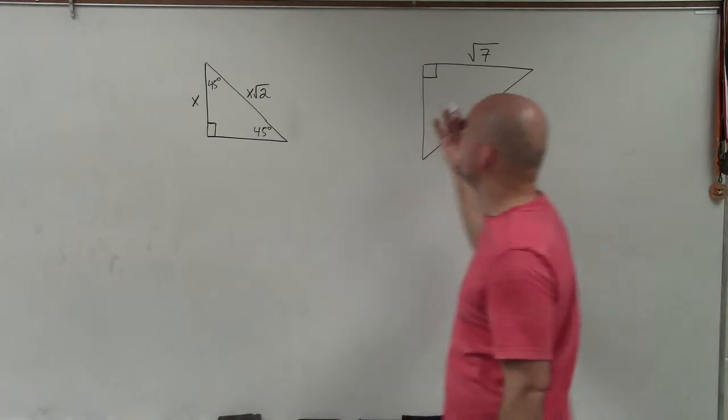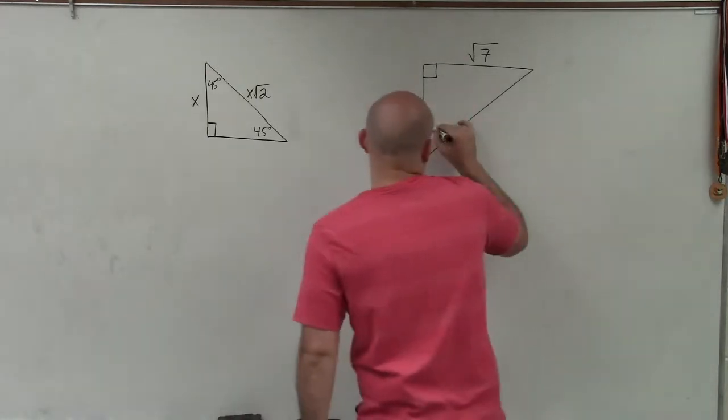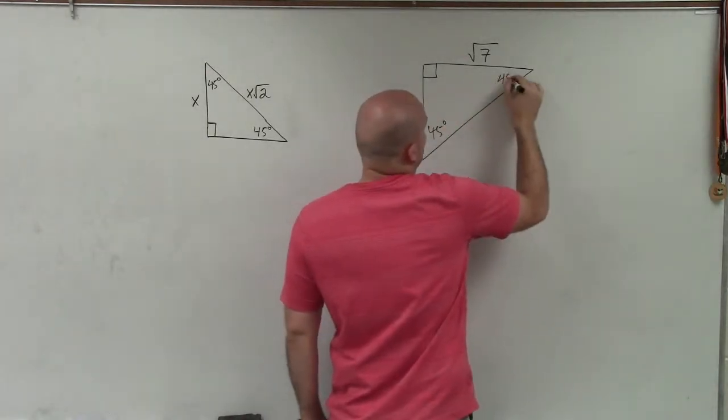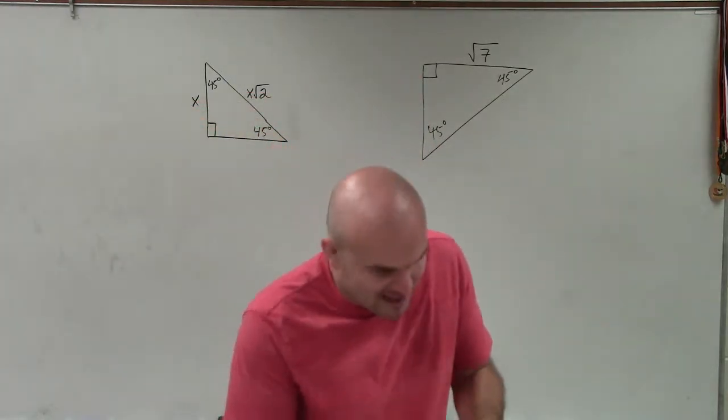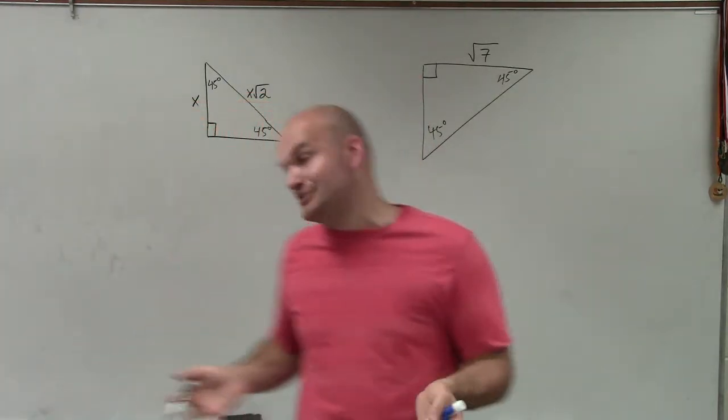Welcome, everybody. So what I have here is a special right triangle. These are 45-45 degrees, and I have a special right triangle, which is a 45-45-90 triangle.